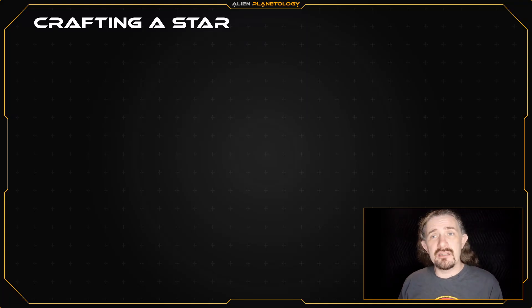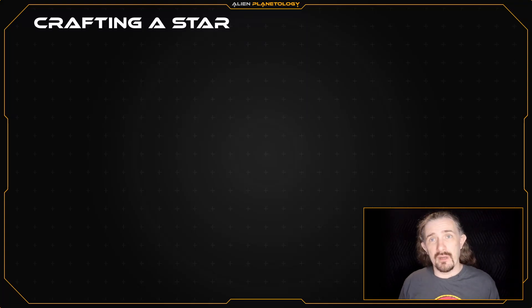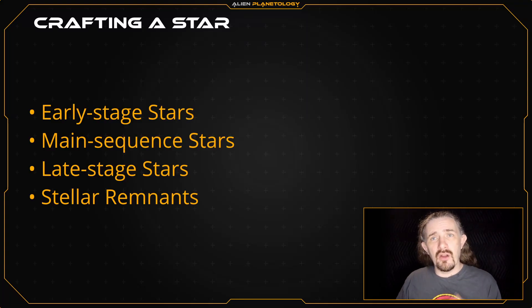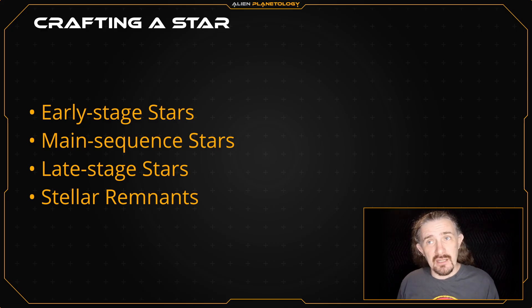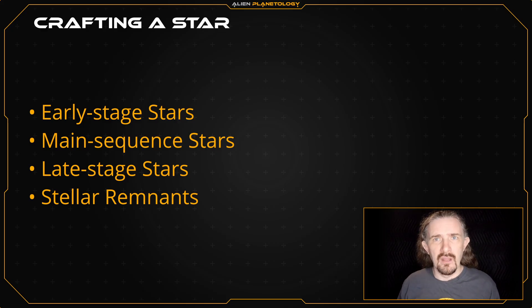In my previous video, I discussed the various types of stars and organized them into four categories: Early Stage Stars, Main Sequence Stars, Late Stage Stars, and Stellar Remnants.